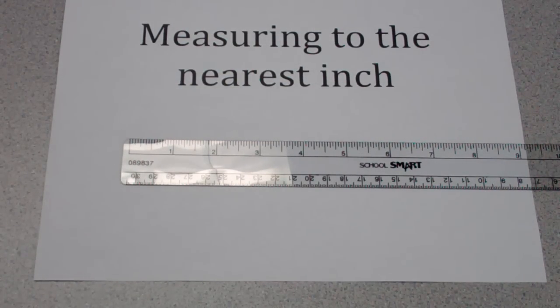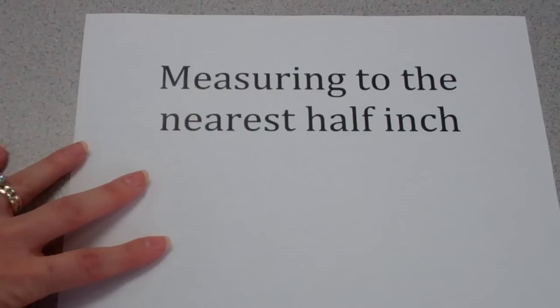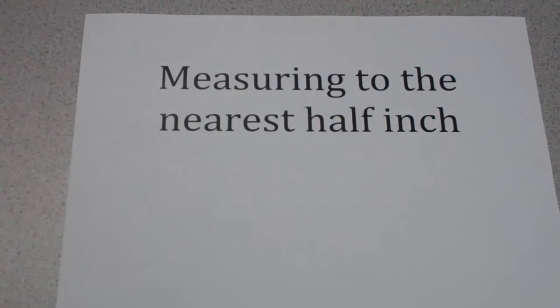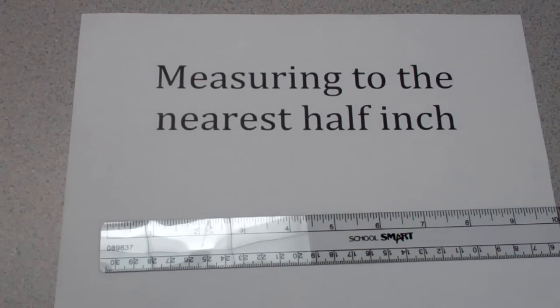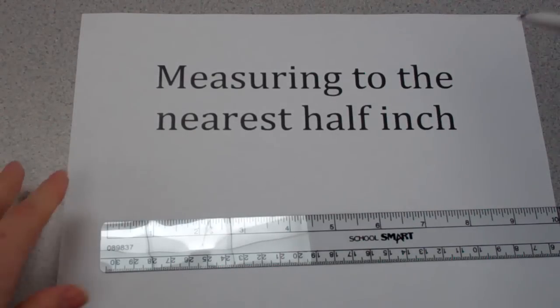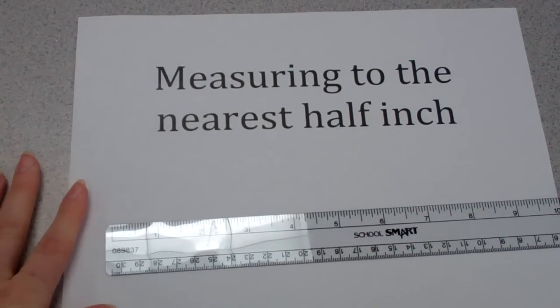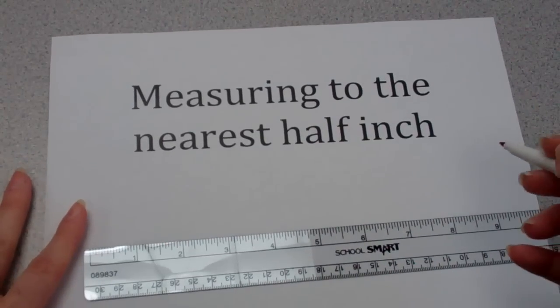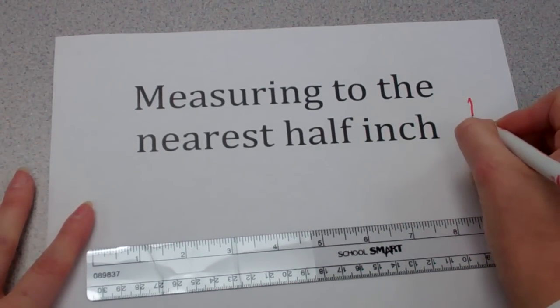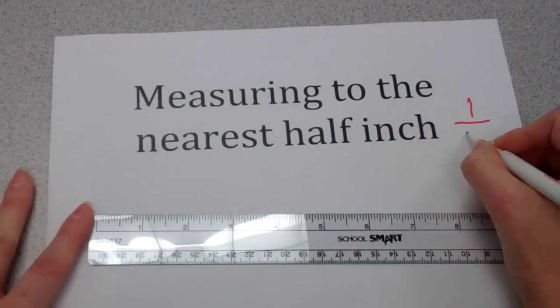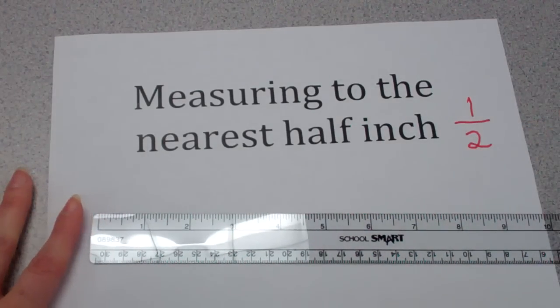Now, measuring to the nearest inch is a good place to start with our ruler, but if we want to be really precise, we might try to measure something to the nearest half inch. This is where we need to think about fractions. When we measure to the nearest whole inch, we're dealing with whole numbers like four, five, six, seven. But the idea of a half inch requires us to understand that half can be represented with the fraction one out of two.